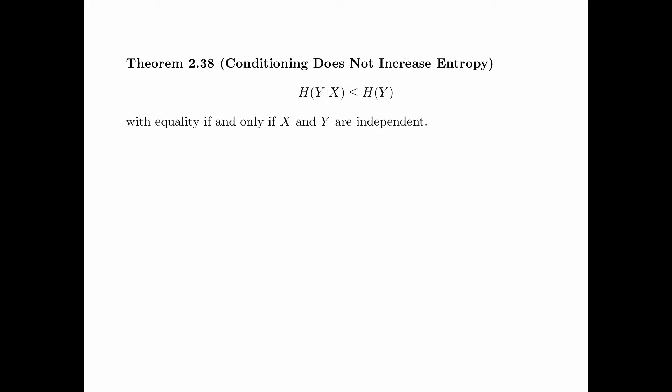Intuitively, this is the meaning of this theorem. Suppose we are interested in a random variable Y with a certain amount of uncertainty. Then, by knowing some side information X, the amount of uncertainty about Y can only be decreased. When X and Y are independent, knowing X will tell you nothing about Y, and therefore the conditional entropy of Y given X is exactly equal to the entropy of Y.